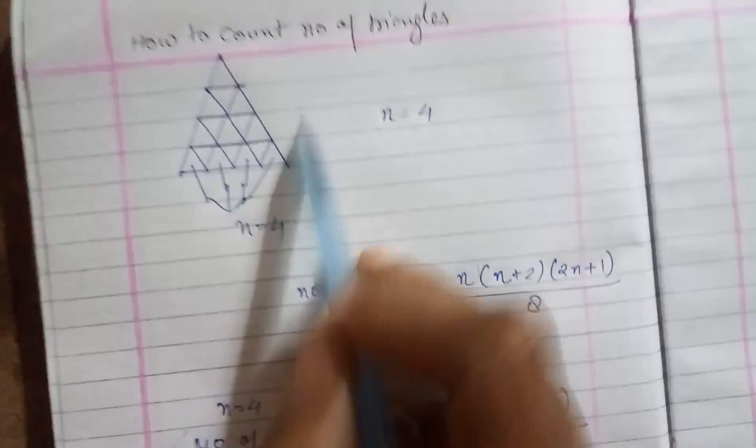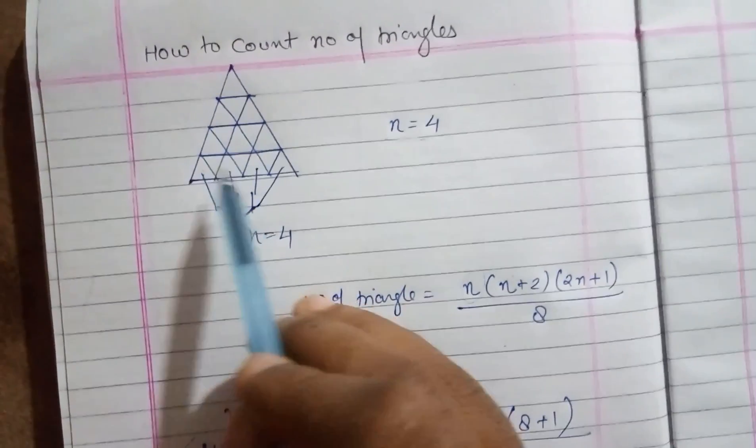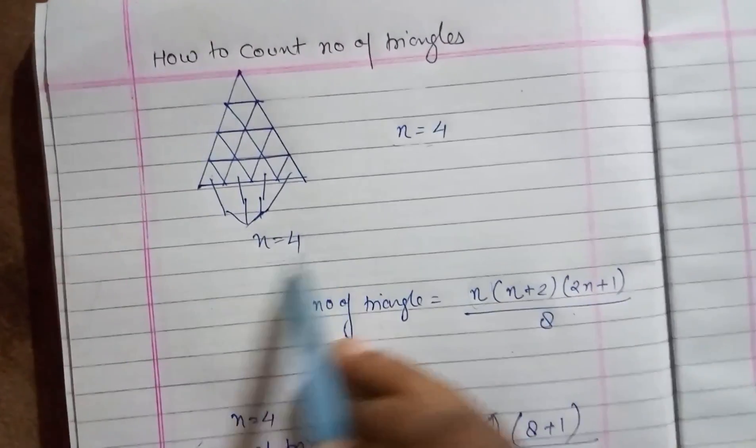As we can see, this triangle, this huge grid is made of four triangles: one, two, three, and four. So n equals to four.